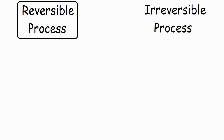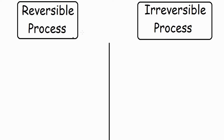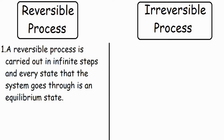Let's study the differences between a reversible process and an irreversible process. The first point under the reversible process is: a reversible process is carried out in infinite steps, and every state that the system goes through is an equilibrium state.